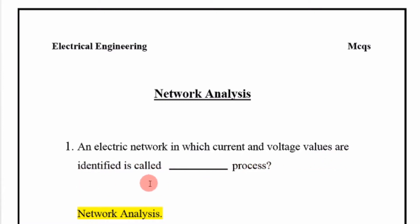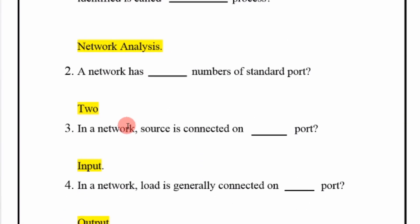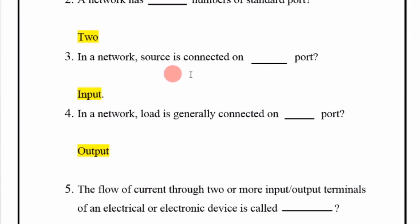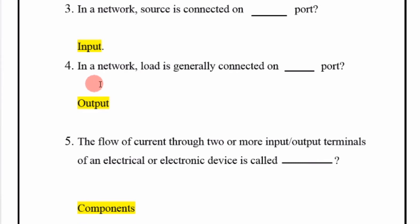A network has two numbers of standard ports. A network source is connected on the input, and a network load is generally connected on the output.